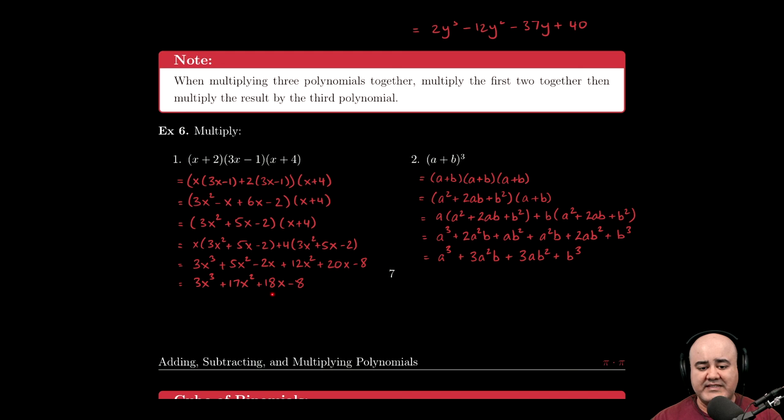Notice that the answer is written in standard form, meaning the degrees are going down by 1. Just as a review, this is indeed a polynomial because the degrees go down by 1 and the degrees themselves are whole numbers. Also, all the coefficients are real numbers. The degree of this polynomial is 3 because that's the highest power. And then the type of this polynomial is a cubic because the degree is 3.